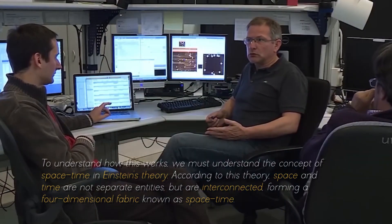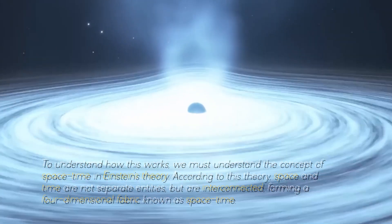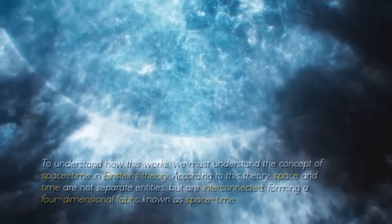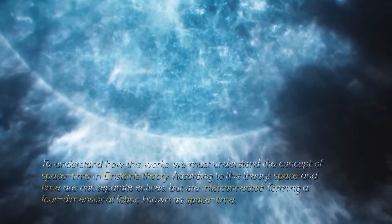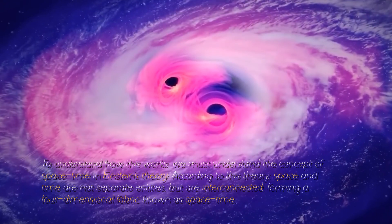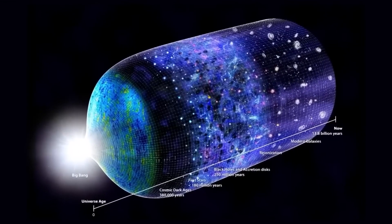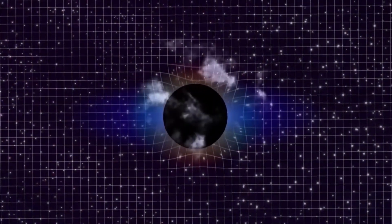To understand how this works, we must understand the concept of space-time in Einstein's theory. According to this theory, space and time are not separate entities, but are connected, forming a four-dimensional fabric known as space-time. Objects with mass warp space-time, creating a gravitational field that affects the motion of other objects.